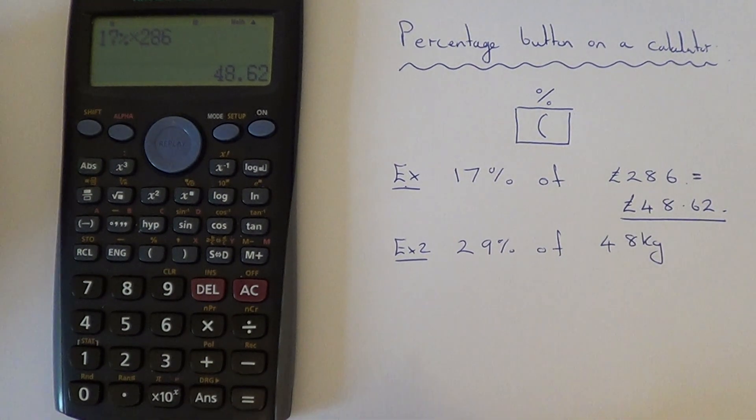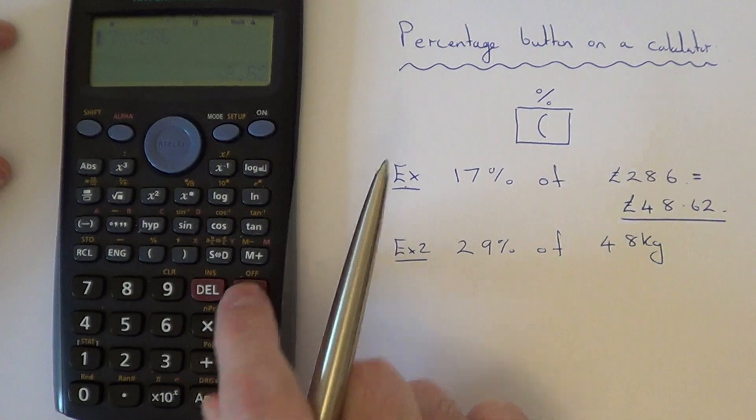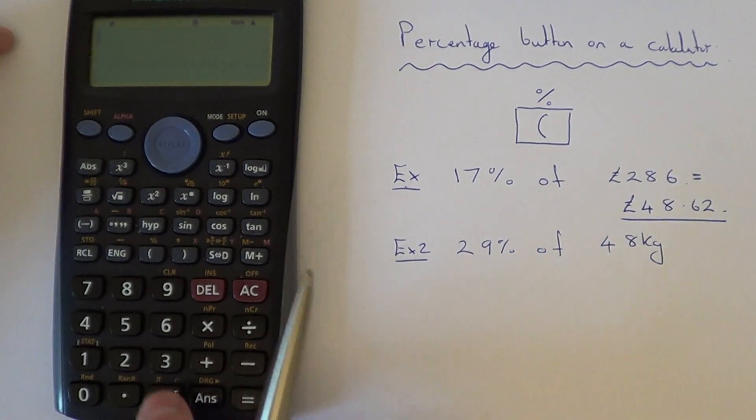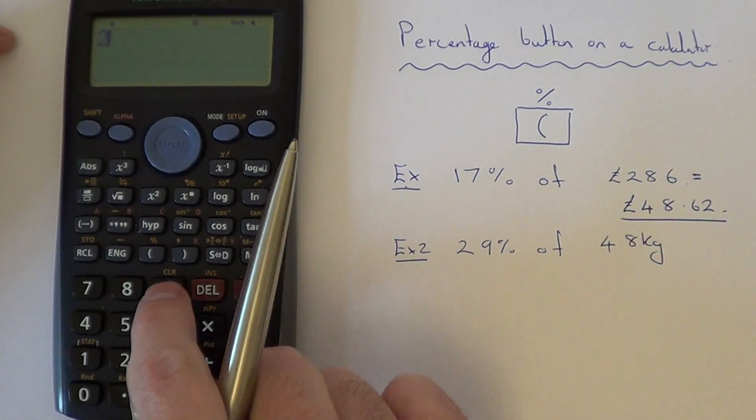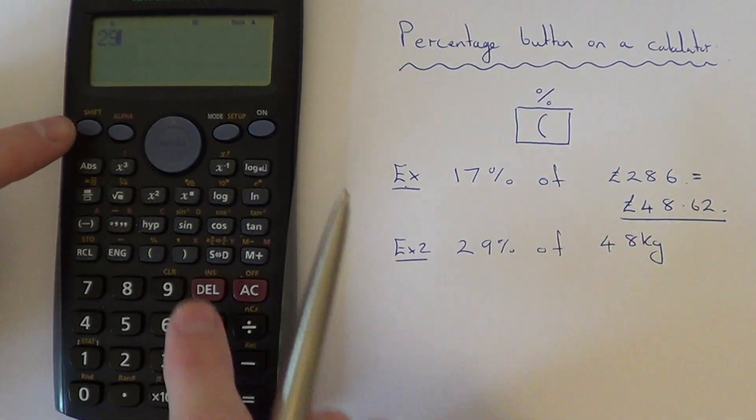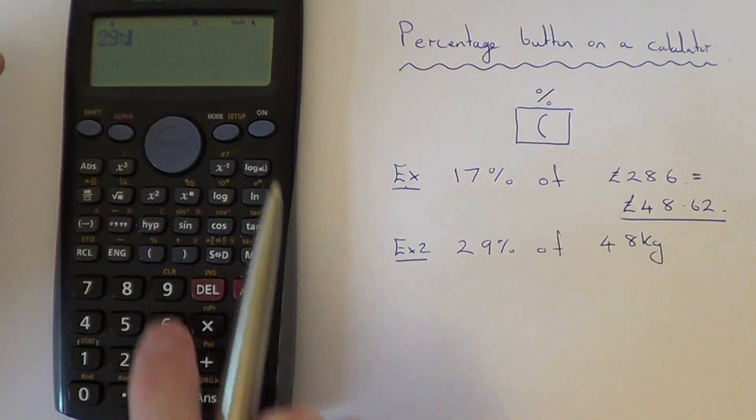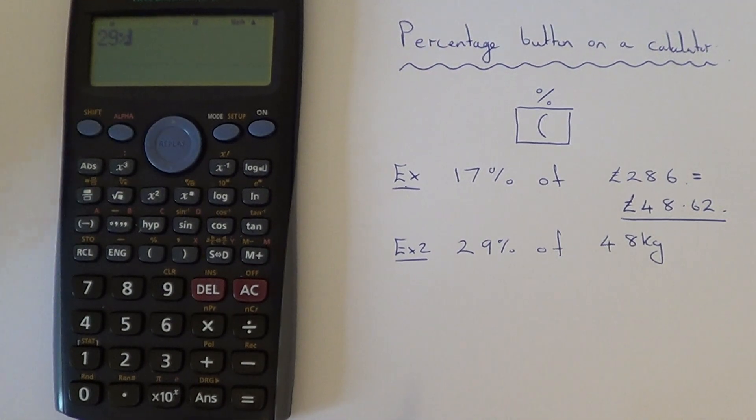Let's do one more example. This time we've got 29% of 48 kilograms. Again, we'll type in 29, then shift left bracket, so there's your percent symbol.